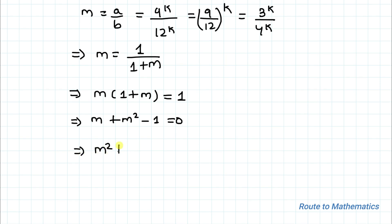Rearranging, we get m² + m − 1 = 0. This is a quadratic equation, so to find the value of m we apply the quadratic formula: m equals minus b plus or minus root of (b² − 4ac) divided by 2a.